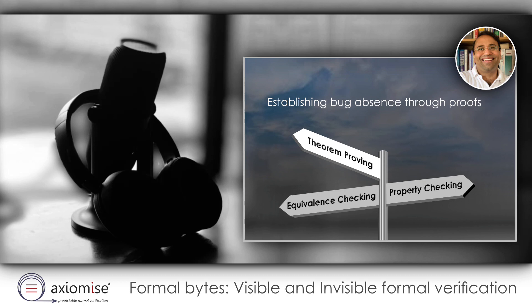The ability of the tools to find bugs or build proofs of bug absence is linked to each other, though in many cases finding bugs is often easier than building proofs of bug absence. We see these exercises as part of a continuum that we've captured in our Adept FV flow, which you should check out on aximize.com and in the blogs that we have written.